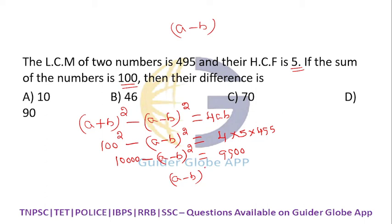So (a-b)² becomes 10,000 minus 9,900, which is 100. If you take the square root, it comes to 10.